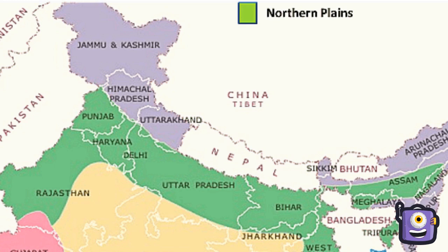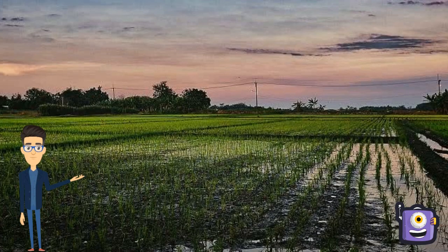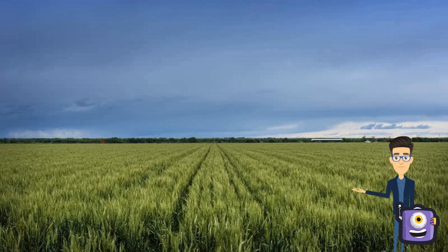When the Himalayas were in the process of elevation, they left a deep depression. This depression gradually filled up with gravel, sand, and silt called alluvium, brought down by the Himalayan rivers. This level stretch of fertile land then came to be known as the Great Plains.